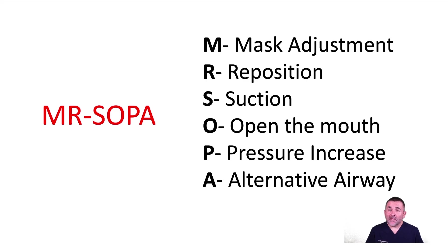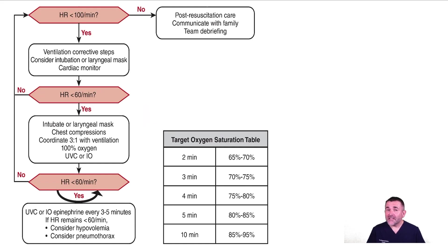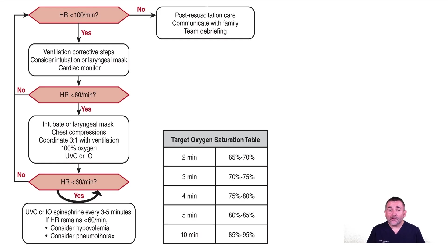If the chest is moving, continue PPV for 30 seconds while you monitor your ventilation rate, pressure, and the baby's heart rate response. After 30 seconds of ventilation that ventilates the lungs — as indicated by an increasing heart rate or chest movement — check the baby's heart rate response again. If the heart rate is greater than or equal to 100, PPV has been successful and we can continue with post-resuscitation care. Continue ventilating at 30 to 60 breaths per minute and monitor the baby's chest movement, heart rate, and respiratory effort. Adjust the FiO2 as needed based on pulse oximetry using the target oxygen saturation table.